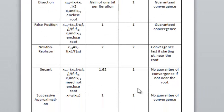But there is no guarantee of secant method that it will converge towards the root always, while bisection and false position, it is guaranteed.